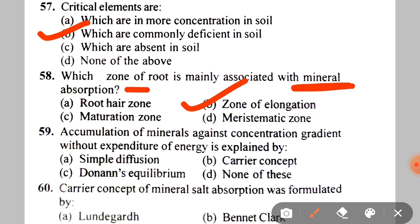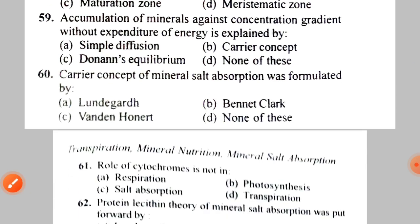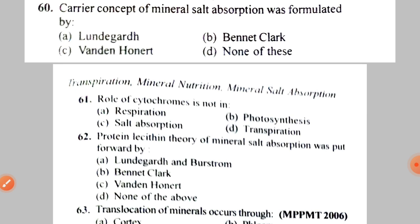Next: accumulation of minerals against concentration gradient without expenditure of energy is explained by A. Simple diffusion, B. Carrier concept, C. Donnan equilibrium, D. None of these. The correct answer is C — Donnan equilibrium.